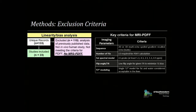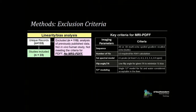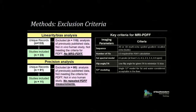Key criteria for MRI-PDFF required all studies to qualify on parameters including their acquisition sequence, number of echo times, addressing the fat-spectral model, minimizing the TR and flip angle to avoid T1 bias, and addressing the T2-star effect. For the precision analysis, a similar model was followed. We had 91 records, excluded about 80, and included 11 studies.